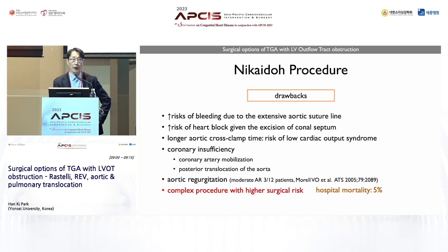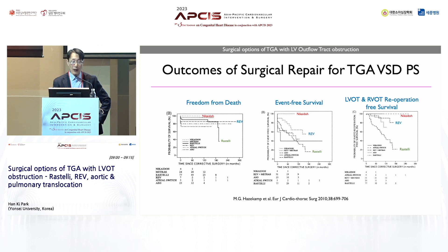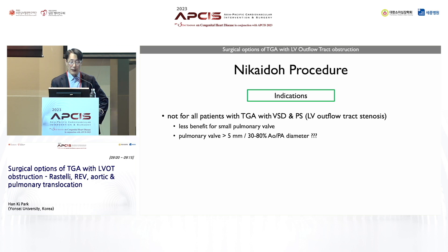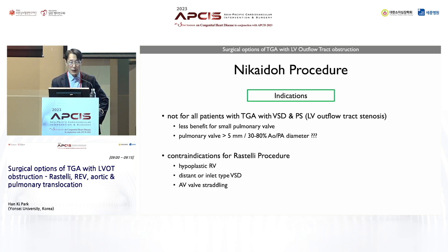Recently reported hospital mortality is about 5%. However, long-term outcome is very excellent. Compared to the REV and Rastelli operation, the Nikaido procedure has higher freedom from death, higher survival, and less re-operation rate. However, this procedure is not indicated for all patients, because if the patient has a very small pulmonary valve size, the advantage of posterior translocation does not provide great benefit. For those patients, the Rastelli operation may be more suitable. There is no clear cutoff value, but it is said the pulmonary valve size should be at least 5 mm to benefit from the Nikaido procedure. The Nikaido procedure can also be used for patients who have contraindications for the Rastelli procedure, such as hypoplastic RV or remote type VSD.